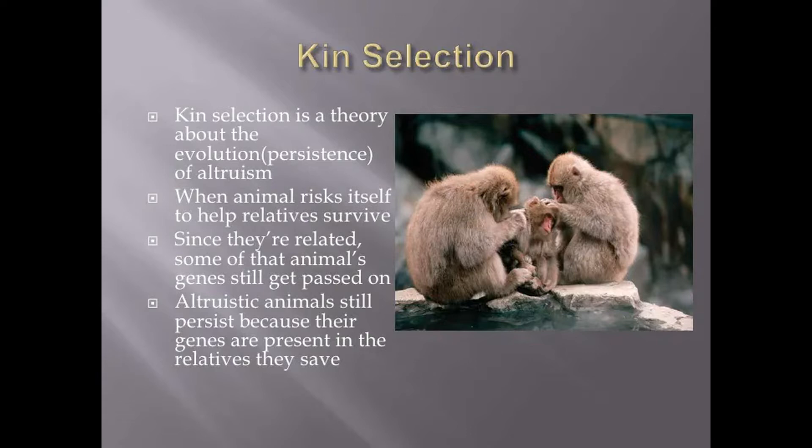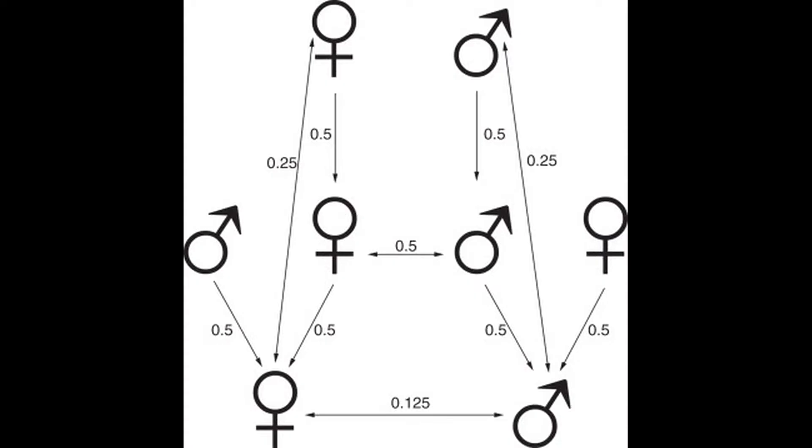In sociobiology, one major question is how altruism can arise between individuals who are not related, or at least not closely related. Kin selection explains why parents would sacrifice themselves for their offspring or siblings for each other, and this relates to their shared genes. In diploid individuals, parents share half their DNA with their children, siblings share a fourth of their DNA with each other, and first cousins share an eighth of their DNA with each other.